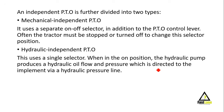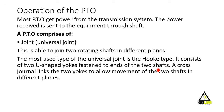The operation of the PTO: most PTOs get power from the transmission system, and the power received is sent to the equipment through the shaft. As discussed earlier, in order to run the implement, we have a shaft conveying power from the engine to that implement. The shaft — which is the PTO — connects the engine to the implement to allow power transmission so that the implement can run.